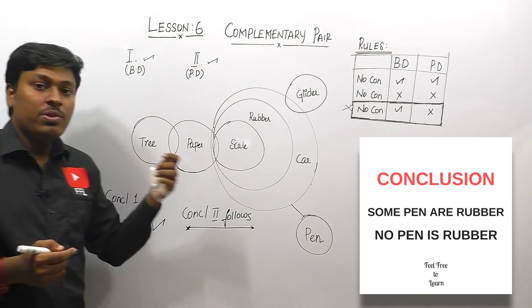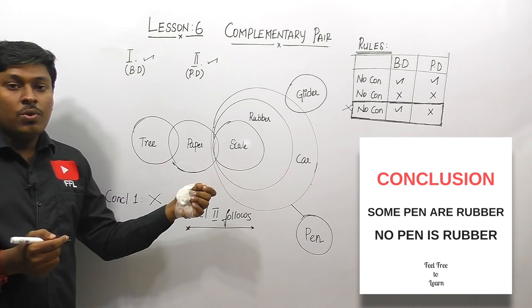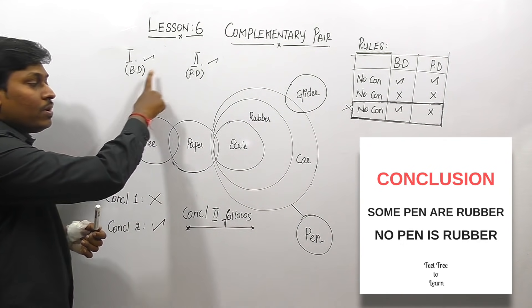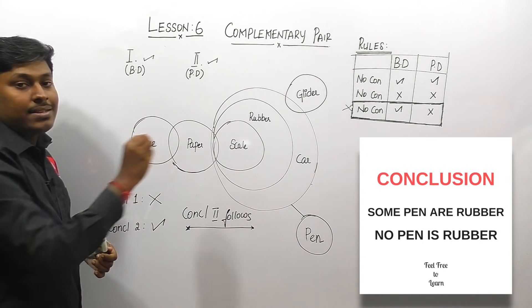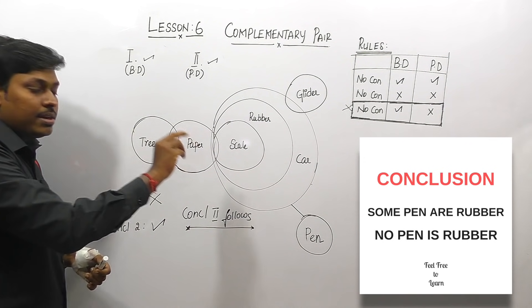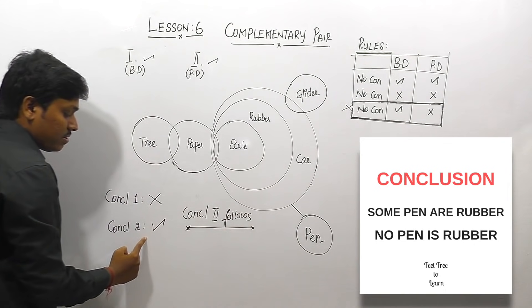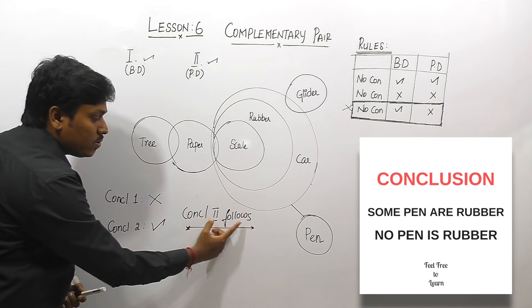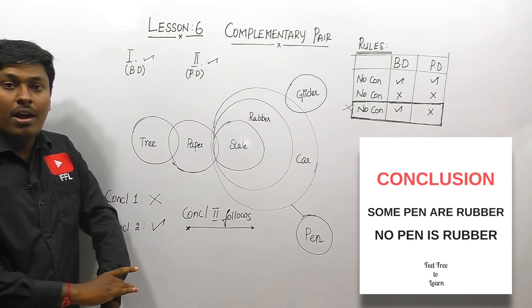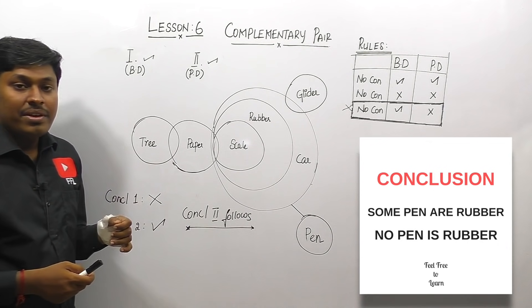In the first three questions, the 'No' conclusion satisfied rule number three, so we went for 'either one or two follows'. In question four, the 'No' conclusion is true in both basic and possible diagrams, so it does not satisfy rule three. We must not say 'either or' — instead, check conclusion one and two separately. Conclusion one is false, conclusion two is true, so the answer is 'only two follows'.